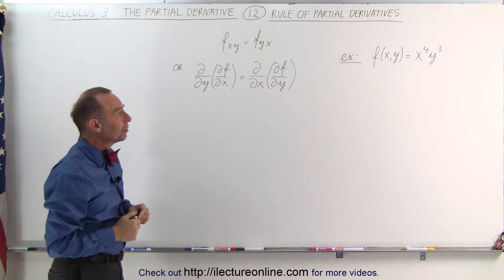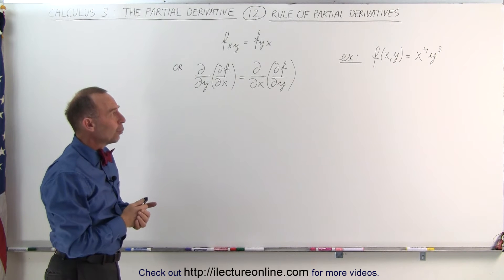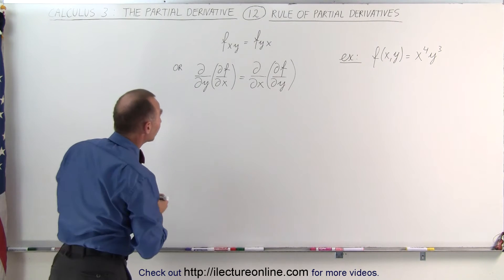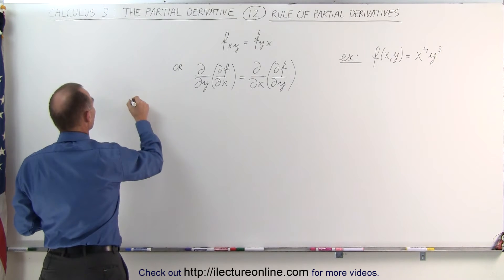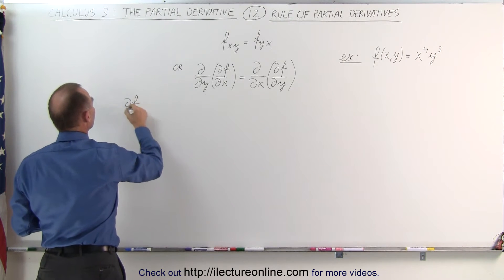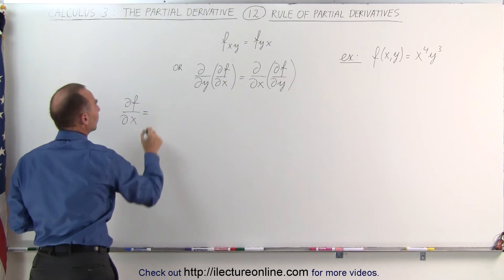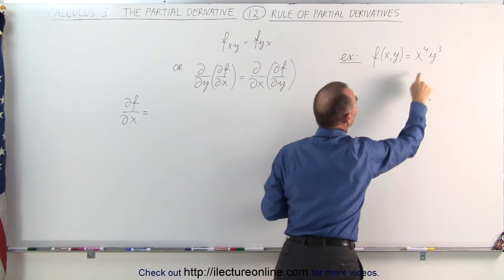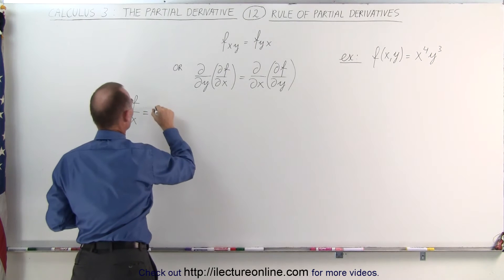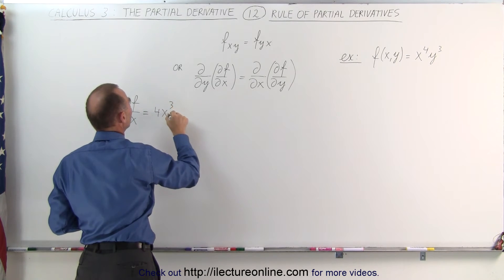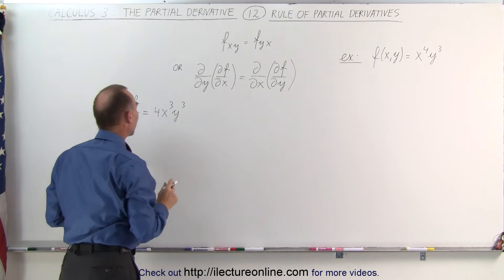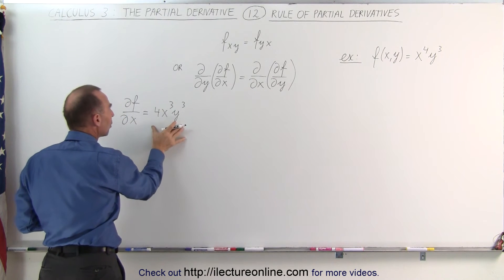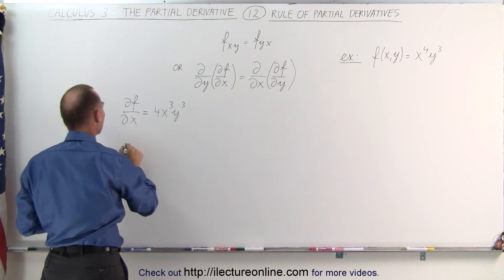Now let's take our example: the function f of x and y equals x to the 4th times y cubed. Let's first take the partial derivative with respect to x. The partial of the function with respect to x — notice that y cubed will become the constant — this then becomes 4x cubed y cubed. Now let's take the derivative of that with respect to the other variable, with respect to y.